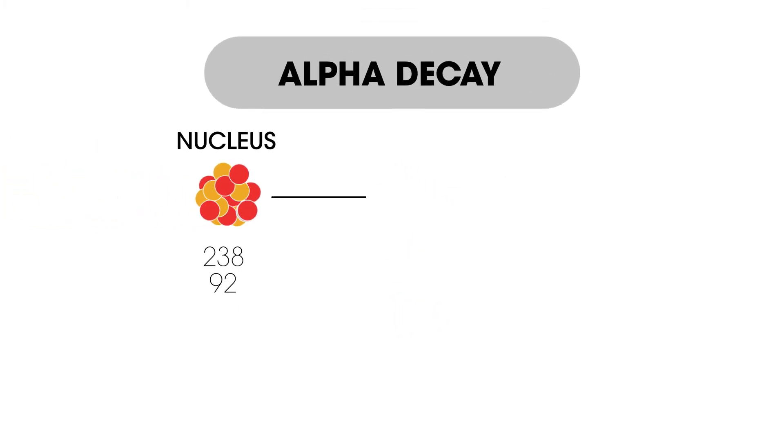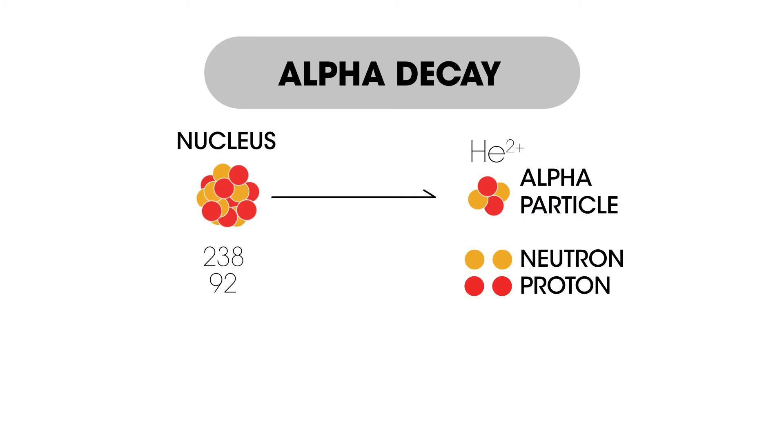Alpha decay is the loss of an alpha particle. An alpha particle is made up of two neutrons and two protons. They have a mass of four and a charge of plus two. When an atom loses an alpha particle, the mass number decreases by four and the atomic number decreases by two.